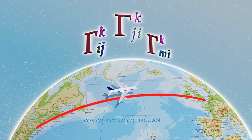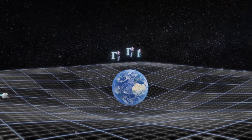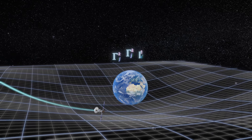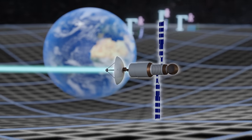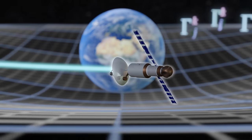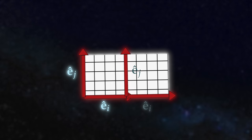Likewise, in general relativity, these same tools allow you to calculate the inertial routes of objects through space and time. But where do such tools come from, and how can we understand them intuitively?